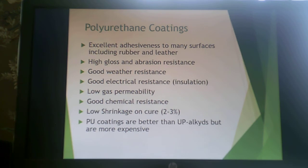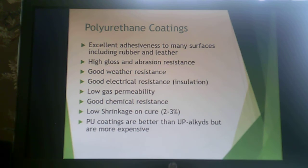When talking about polyurethane coatings, these have a lot of polar groups, so they have excellent adhesiveness to many surfaces including rubber and leather. They can be made with high gloss and very good abrasion resistance, good weather resistance, good electrical resistance for insulating applications, low gas permeability, good chemical resistance, and very low shrinkage on cure. Polyurethane coatings are generally better than UP alkyds but are more expensive.